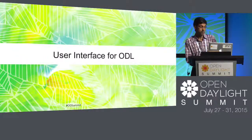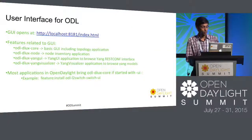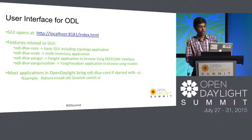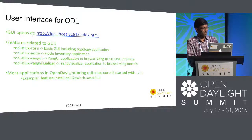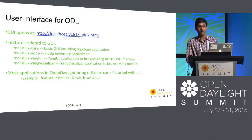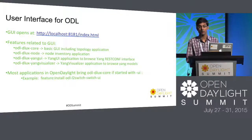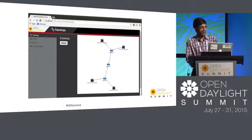This is the user interface I'm going to discuss. The UI opens at localhost port 8181 at index.html. Note that this has changed in the Lithium version — before in Helium, it was slash dlux slash index.html. This slide was pulled from the ODL Operations Guide which Louis presented on Monday. That guide is a good reference for new beginners and covers installing Mininet, Robot code, the ODL controller, troubleshooting issues, Postman, RESTCONF, and REST URLs.